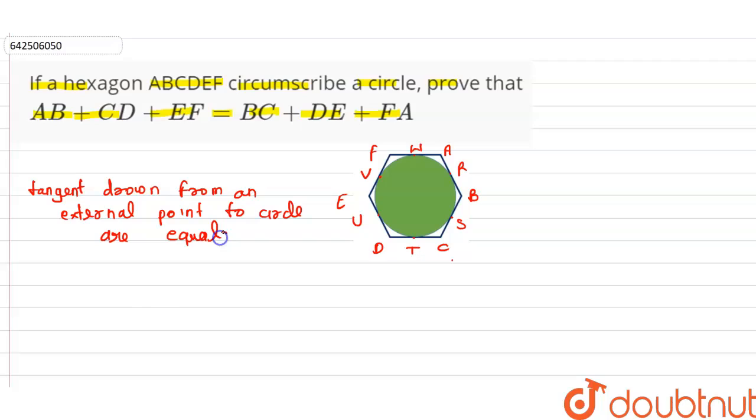So by using this, we can say AR is equal to AW. Let's suppose this is equation 2. The tangents from point B: BR is equal to BS. Let's suppose this is equation 3.